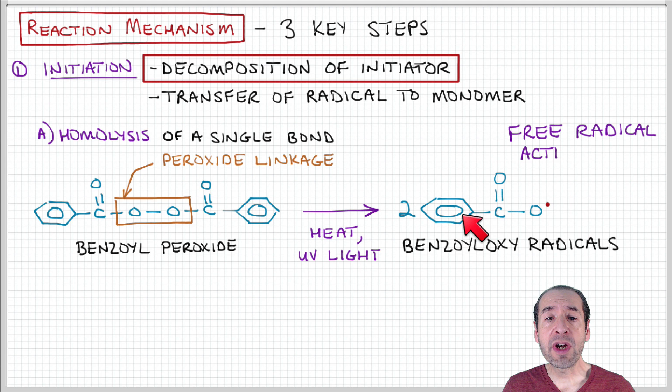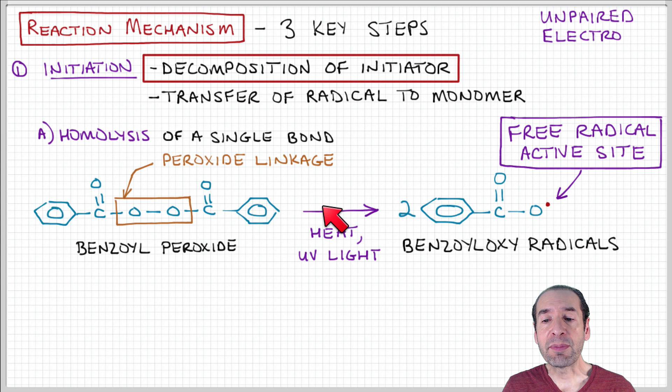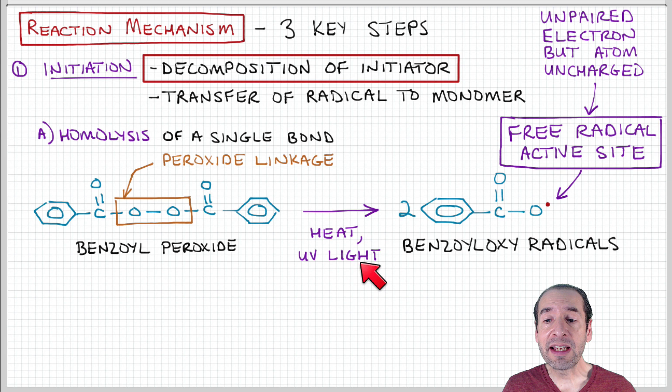So one example is a peroxide linkage, benzyl peroxide, for example. This could be cleaved by heat, by heating it up, or by exposing it to UV light, to create this radical active site.